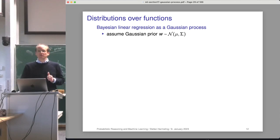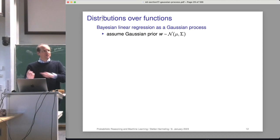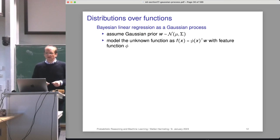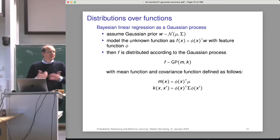Let's do Bayesian linear regression and interpret it as a Gaussian process — taking a more abstract view on something we already know. In Bayesian linear regression we typically have a distribution over a parameter W. In Gaussian processes we have distributions over functions. If I pick a W, I can define a function f(x) = phi(x)^T W. Since W is random, f is a random function.